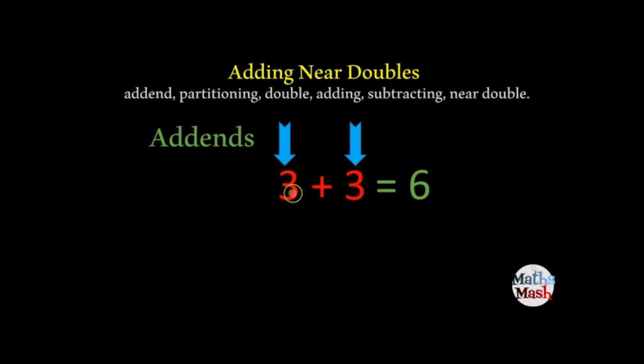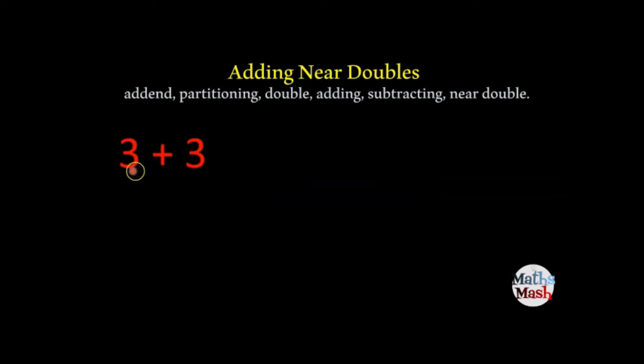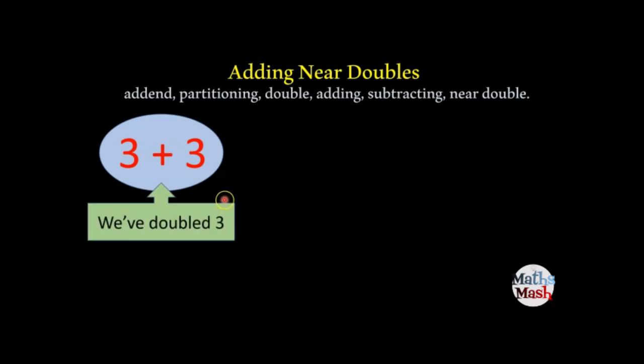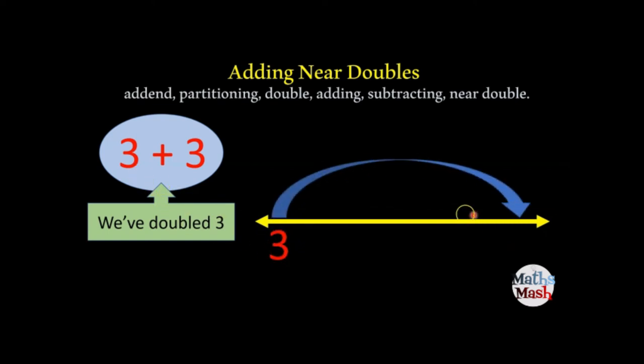Okay, so you can also say that we've doubled 3 here. So we've got 3 plus 3 and we've doubled it and we draw our nice straight number line with a ruler and we start with our 3 here on the number line and then we're going to make a jump of 3 here and that's going to land us on 6. So the answer to 3 plus 3 is 6. And as I said before we've doubled 3 which means basically you add 3 to itself.